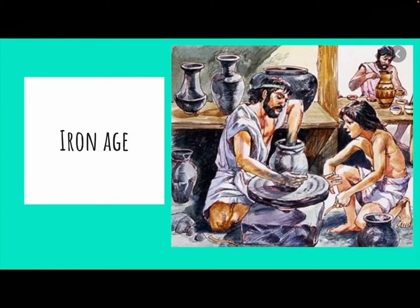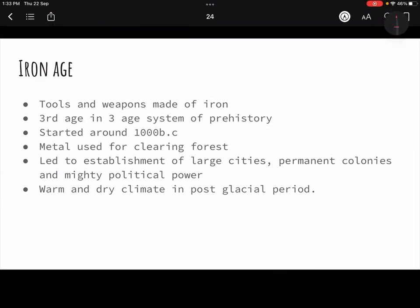Yesterday we finished the Bronze Age and the Chalcolithic Age, so today's topic is the Iron Age. Coming from the Paleolithic period to the Iron Age, human civilization came a long way — this was by far the most civilized and complex society we have studied till now. The Iron Age is the third age in the three-age system of prehistory: the Stone Age, the Bronze Age, and the Iron Age.